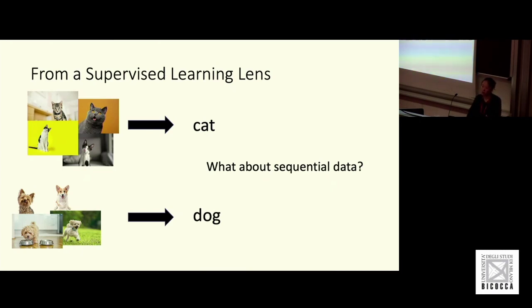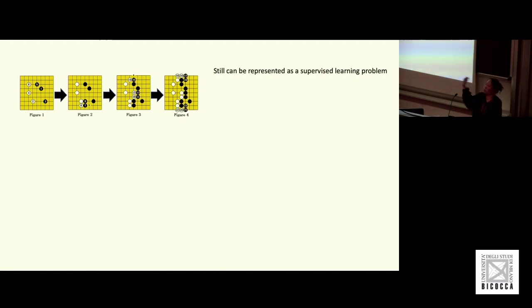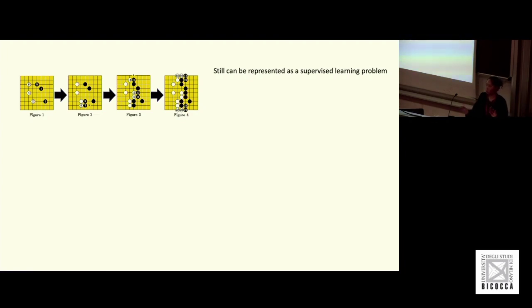Let's start from the supervised learning lens. A classic problem is image classification: we have a dataset with labels already attached, and we train a model to classify images of cats and dogs correctly. There's no temporal nature to this problem. But many real-world problems have a temporal component where the decisions you've made in the past can affect what state you're in now and what decision you want to make in the future.